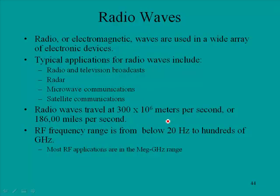Radio waves are typically much higher frequency. Electromagnetic waves are used in a wide array of electronic devices. Typical applications for radio waves include radio and television broadcast over the air, as well as cable in this frequency range. Radar uses radio waves, microwave communications, and satellite communications — all of these are using RF. Radio waves travel at 300 times 10 to the 6 meters per second, or 186,000 miles per second.